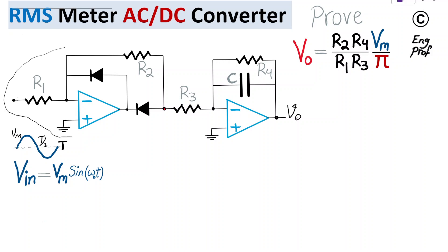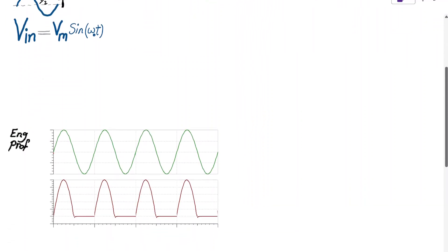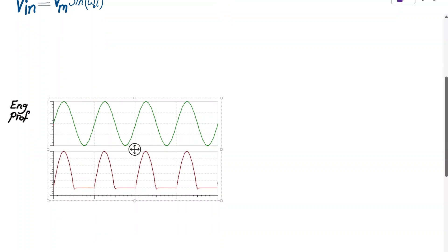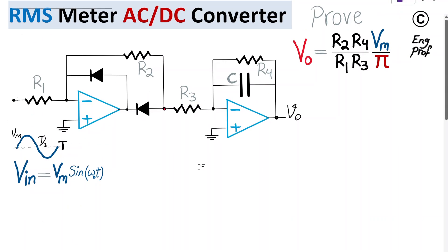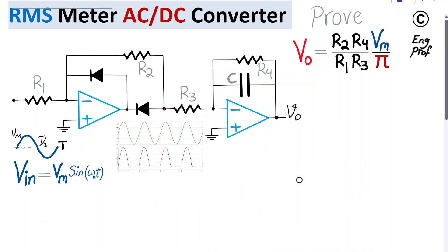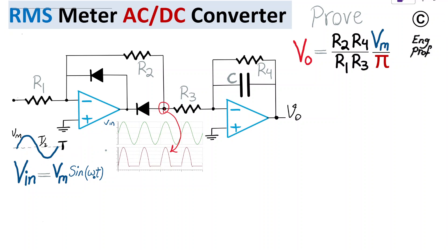Focusing on the first stage — the half-wave rectifying stage — I want to show the voltage at the midpoint node Vx. Assuming a sinusoidal input, Vx will follow the input during the positive half-cycle and remain at zero during the negative half-cycle.